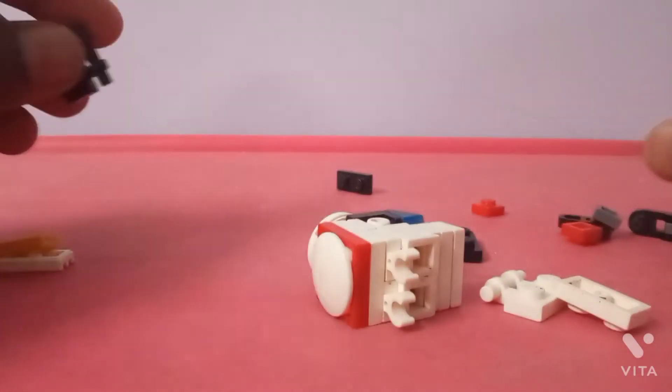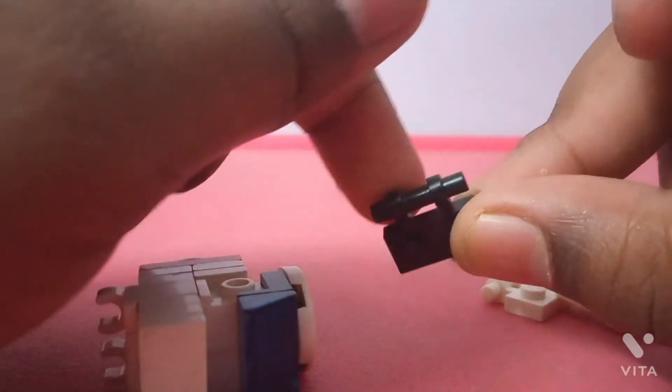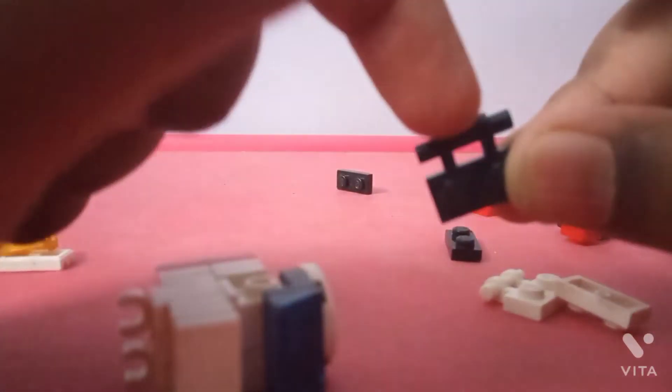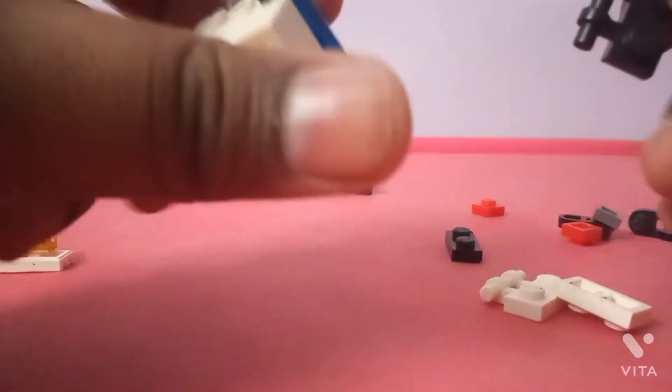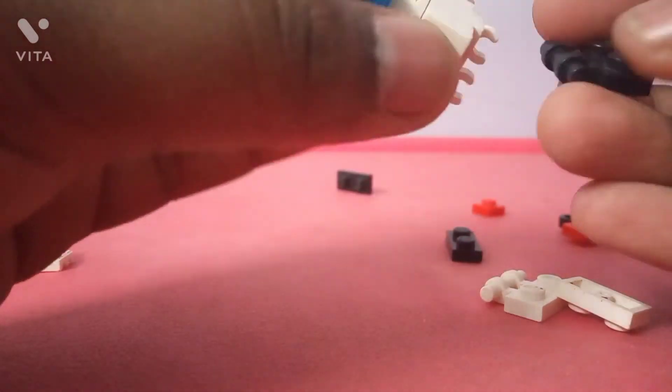He's super duper fat. Anyway, you take one of your 1x2 things with the bar with these things and then you connect it using the middle rim thing.